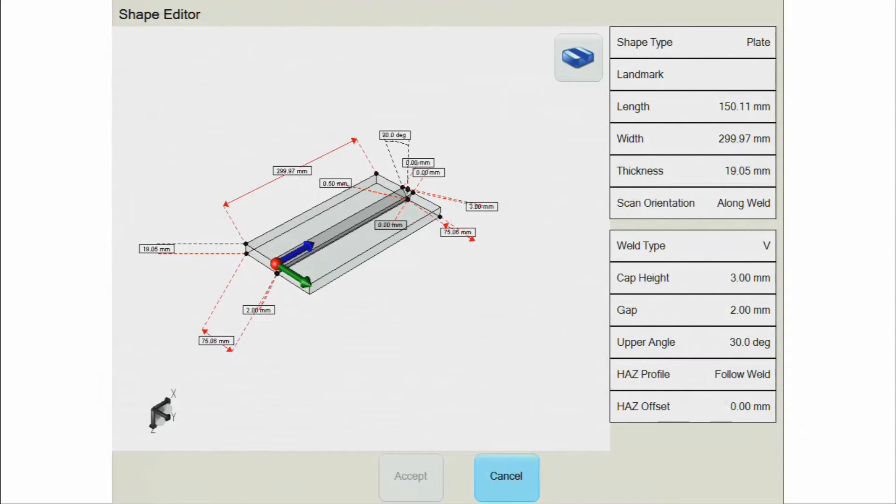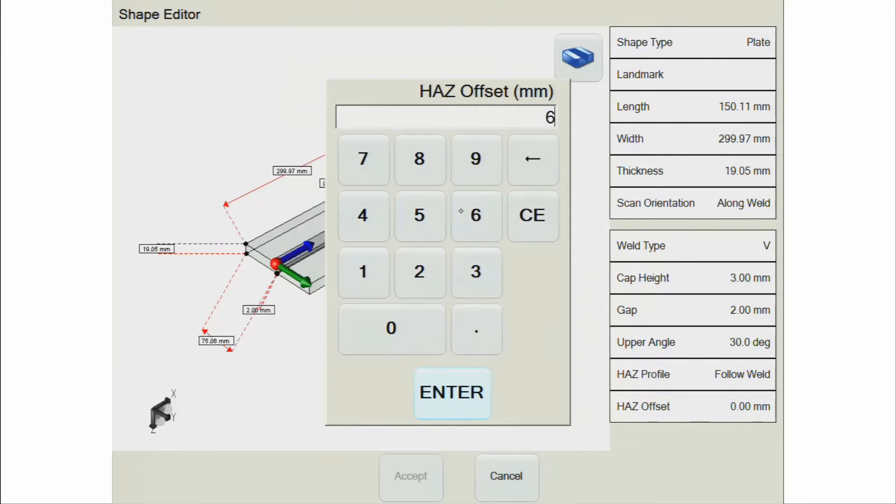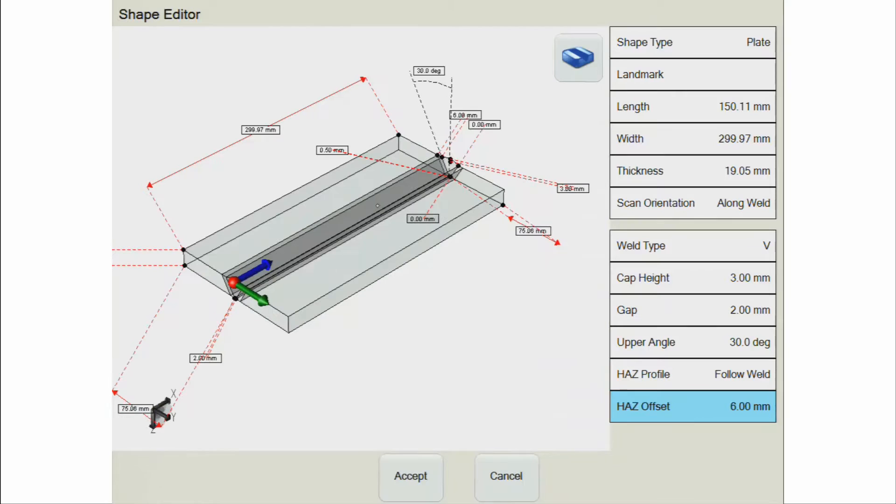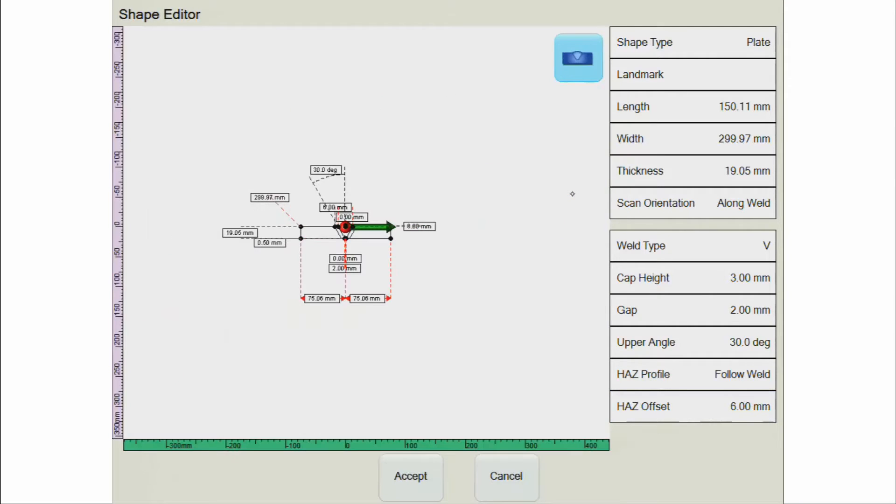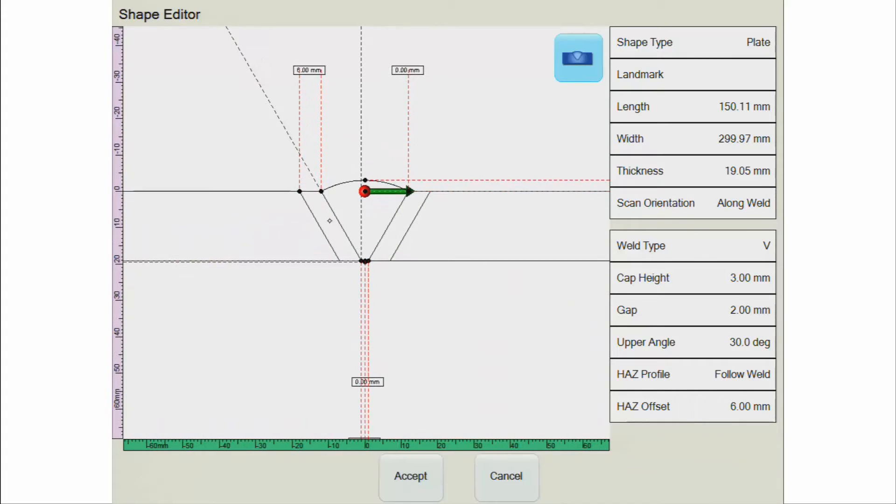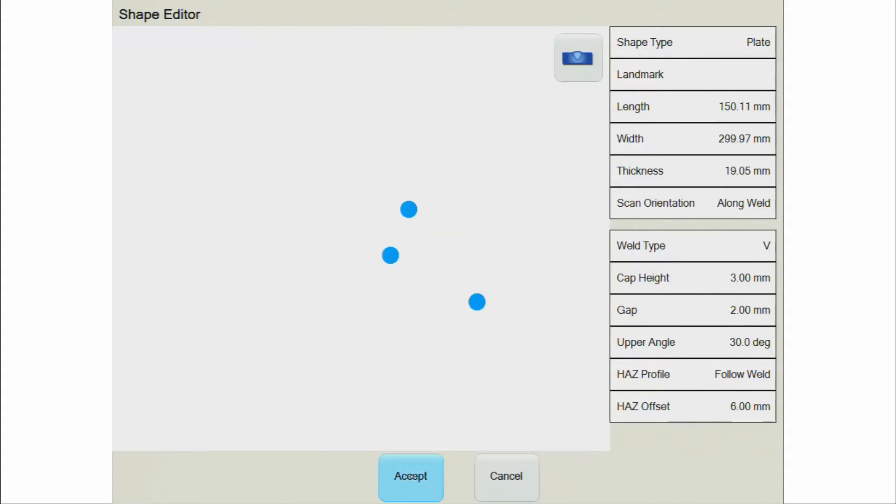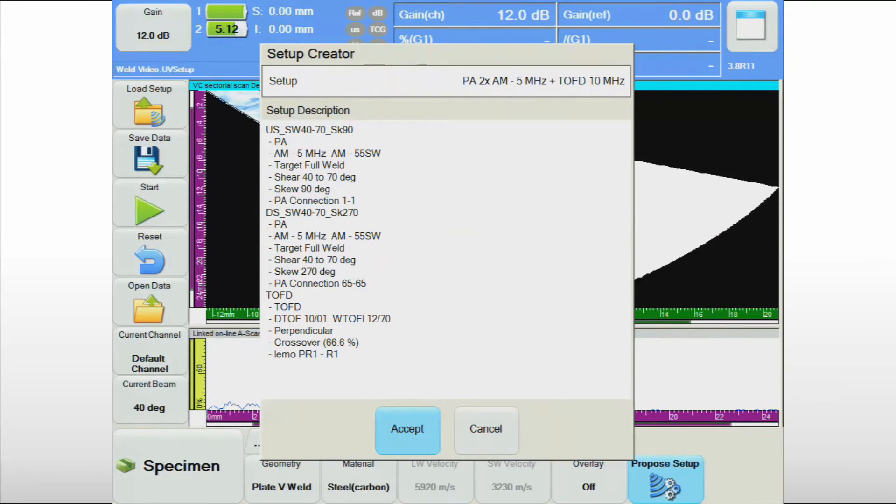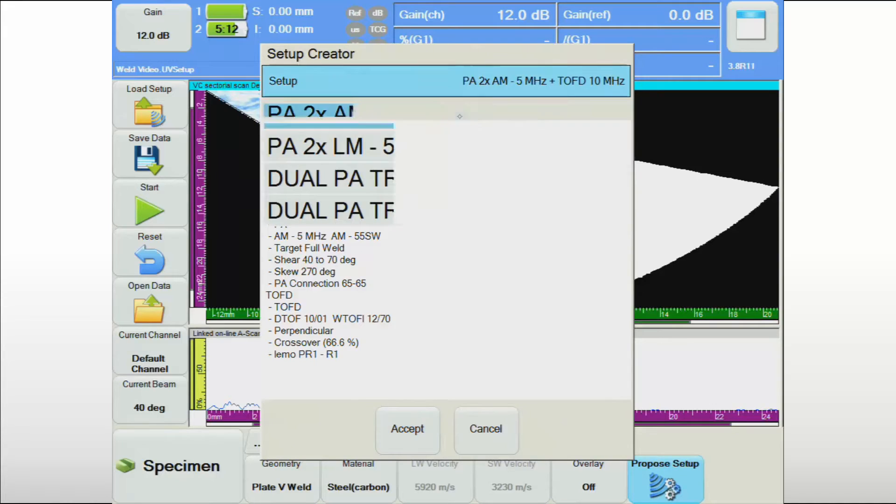The UltraVision Touch software guides the UT operator through an efficient workflow for preparing the weld inspection. The weld geometry, including bevel and heat affected zone parameters, can be easily configured in the graphical user interface of the TOPAS-16. Once the specimen is completely defined, the UT operator can use the proposed setup feature of UltraVision Touch.